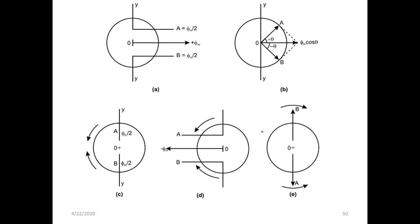According to this theory, any alternating quantity can be resolved into two components which rotate in opposite directions. The stator winding produces an alternating flux of maximum magnitude φm. Each component has magnitude as half of the maximum magnitude of the alternating flux: φm/2 and φm/2. The resultant of the two fields is φm cos θ. Thus the resultant field varies according to the cosine of the angle.